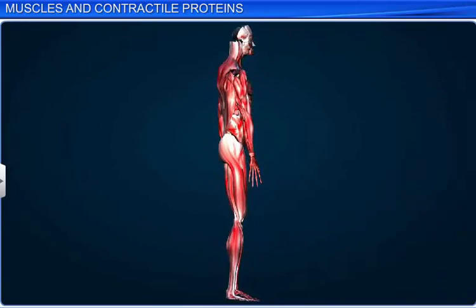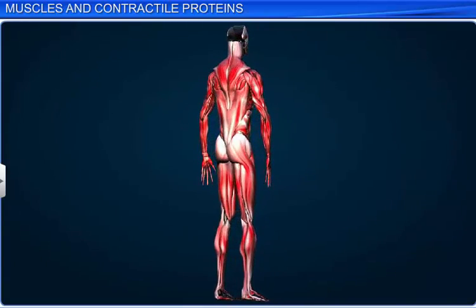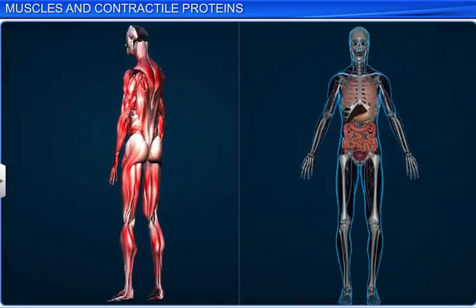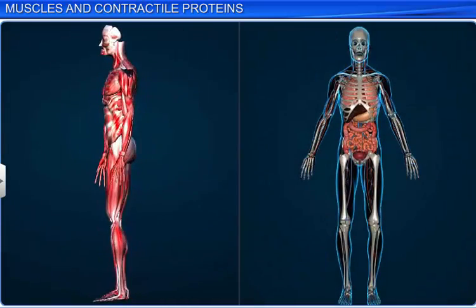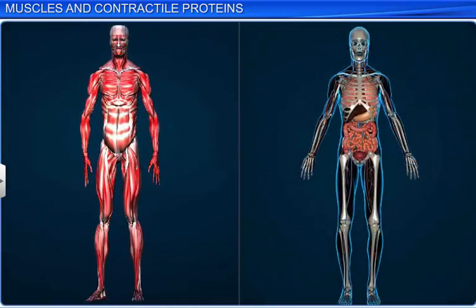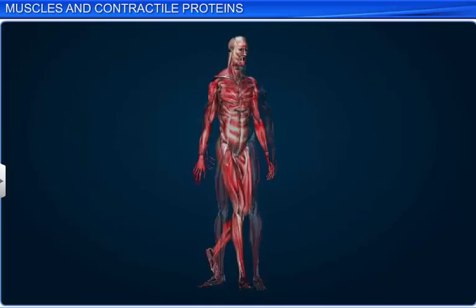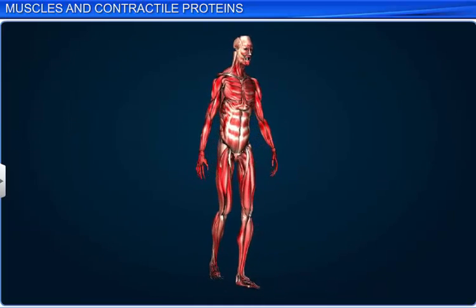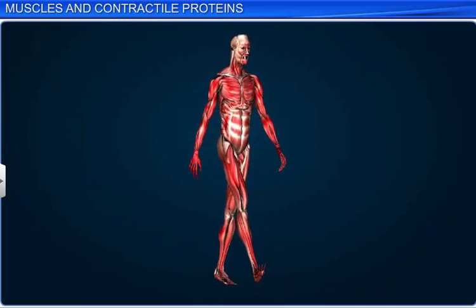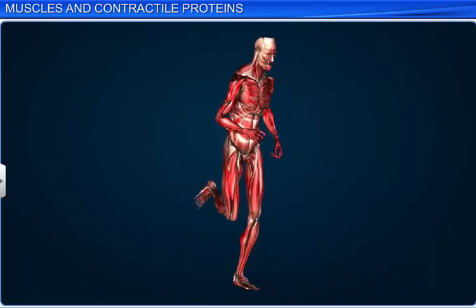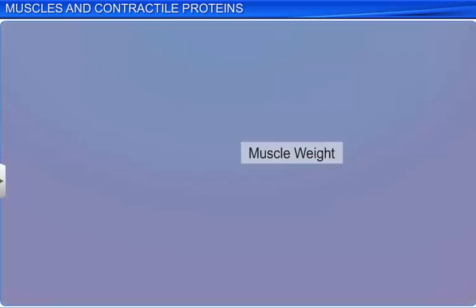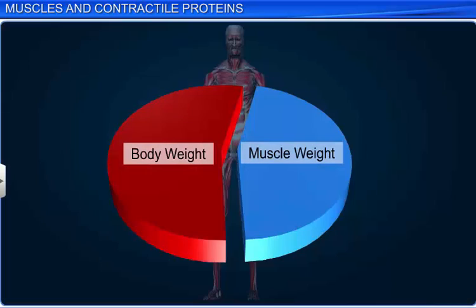Muscles play an important role in body movements, as well as the movement of internal organs. Without muscles, it would be impossible to bend, stretch, walk, or perform any activity. In fact, muscles constitute about 40-50% of body weight in adults.